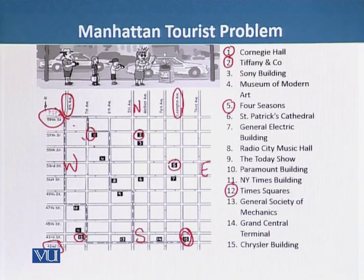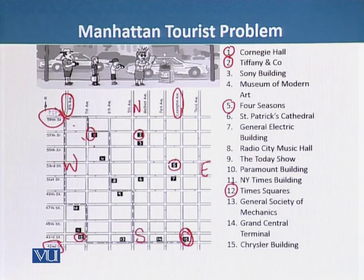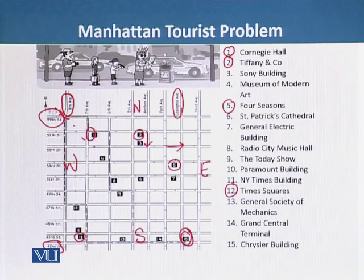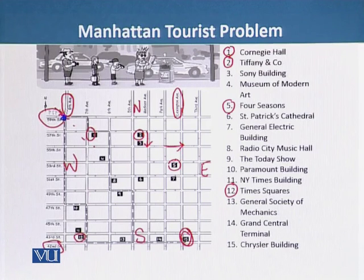The tourist wants to see as many attractions as possible. They are allowed to move only southward or eastward — these are the only two permitted directions. The tourist cannot move north or west. There are two notable paths shown here.